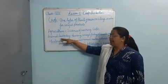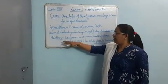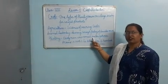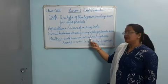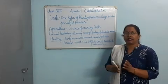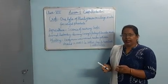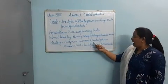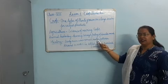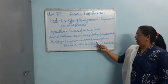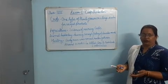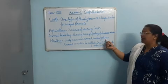Agriculture and animal husbandry have a history. Early man was a nomad — he moved from one place to another in search of food, shelter, and other necessities. He was also a hunter; he killed animals for food and used to eat raw flesh or cooked flesh.